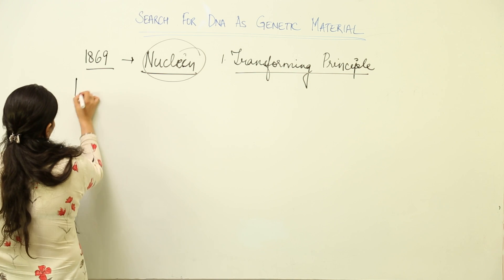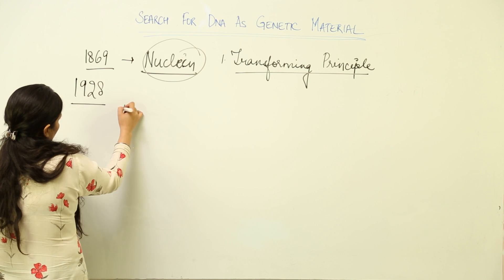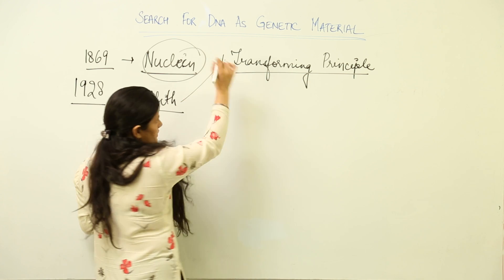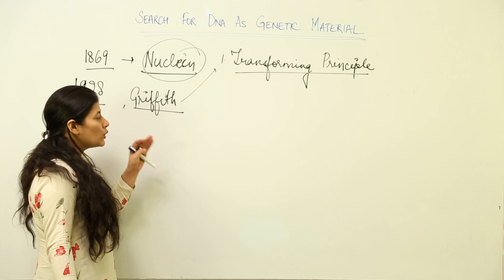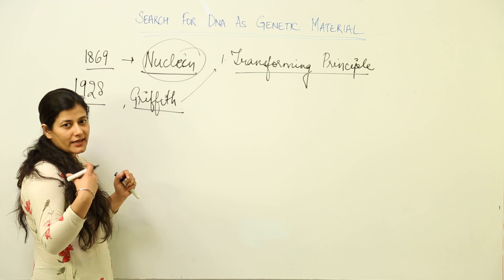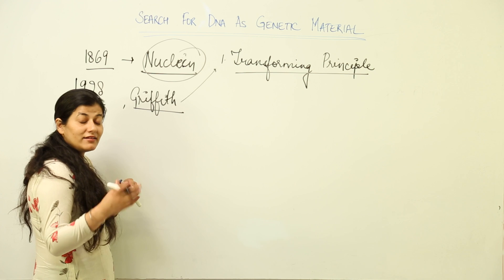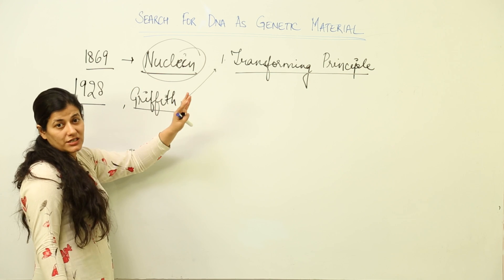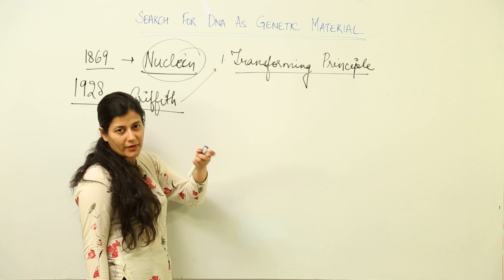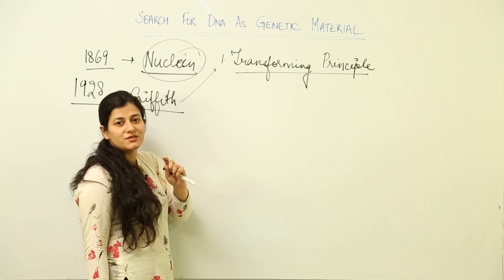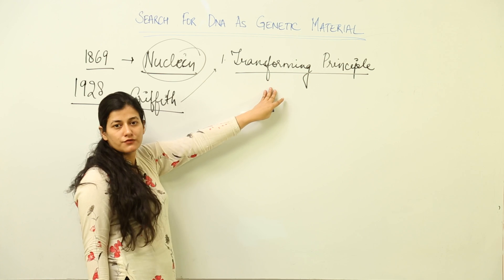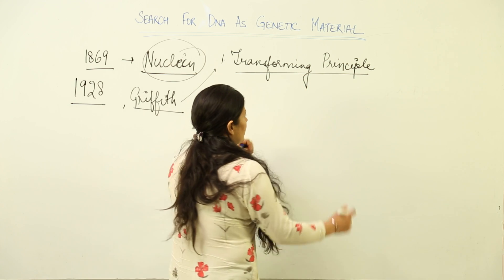In 1928, Griffith conducted an important experiment that talked about transformation. What was observed is that the physical characteristics of a bacterium changed because of the genetic material — specifically, it was DNA that could change the physical characteristics of the bacteria used in the experiment. Whatever molecule was responsible for this was named the transforming principle.